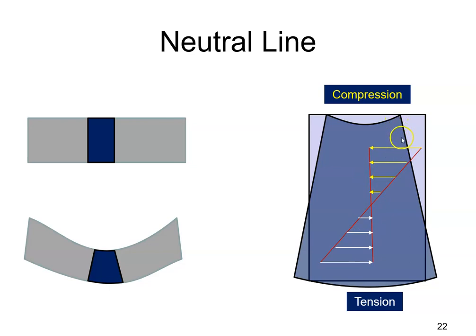The compressive forces are getting smaller as we go down through the piece of metal, as are the tensile forces. They're getting smaller as we go up the piece of metal. And at some point, there is neither compression or tension. Just at this point here, and that's the neutral axis.